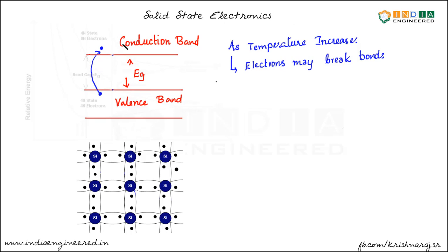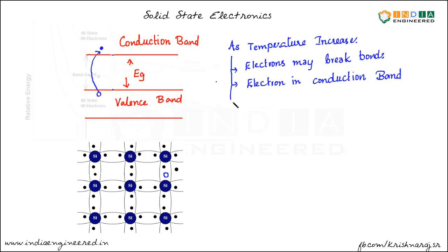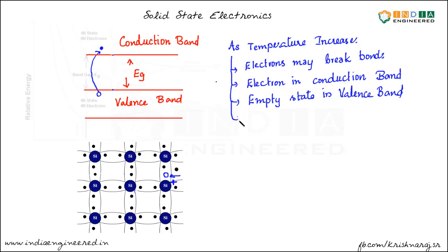So this electron came to the conduction band. Now we have a vacancy in the valence band — an electron in the conduction band and an empty state in the valence band. So conduction is possible. Once this electron moved out of the bond, this silicon atom will gain a positive charge. But this silicon atom cannot contribute to conduction because it is held in the crystal and is not free to move — the silicon atom is immobile.